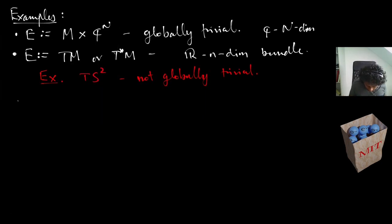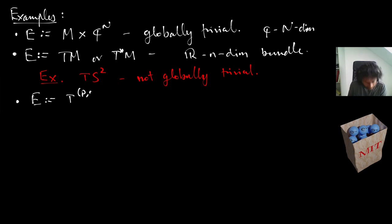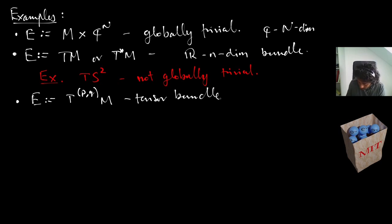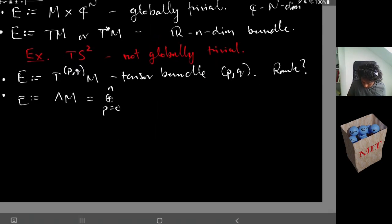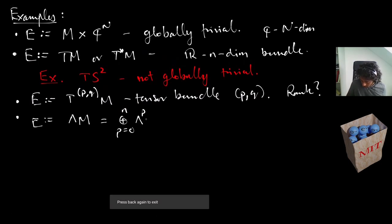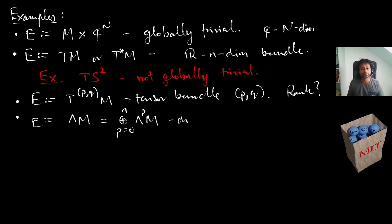If we take tensors of rank (p,q) we get the tensor bundle of (p,q)-tensors — I'll let you think about the rank. For differential forms we can take the exterior bundle, which is the sum of all individual forms — again I'll let you think about the rank.